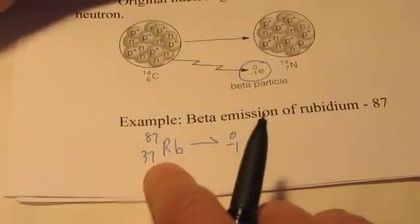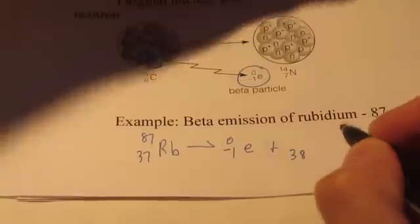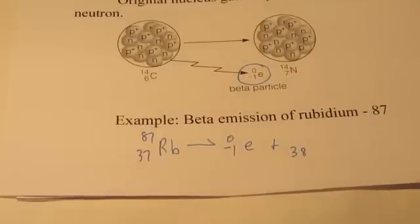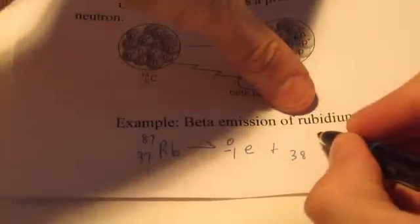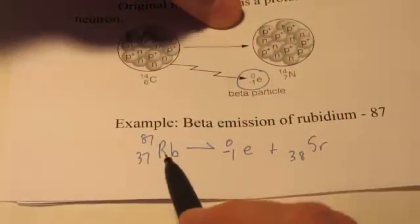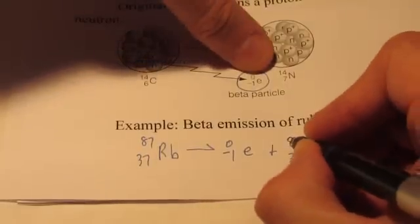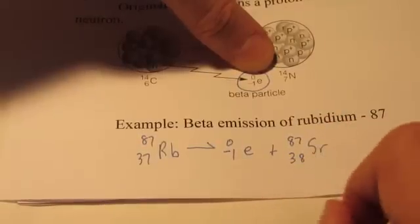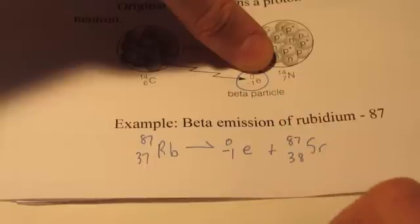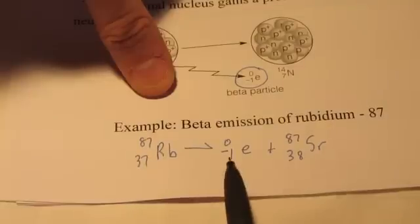Now if a neutron turns into a proton, we are going to end up with a particle with 38 protons. Now the element with the atomic number 38 is strontium, Sr. So we transmutated rubidium into strontium. Notice the mass number stays the same. We still have the same number of protons plus neutrons, simply a neutron turned into a proton. So the total number stays the same.